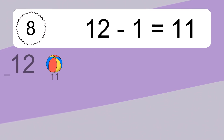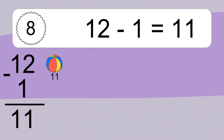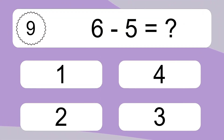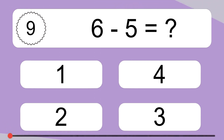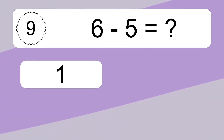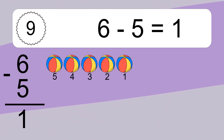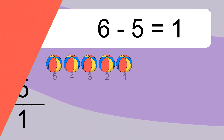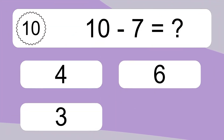12 minus 1 equals what? 12 minus 1 equals 11. Let's count it: 11. 12 minus 5 equals what? 12 minus 5 equals 1. Let's count it: 5, 4, 3, 2, 1.